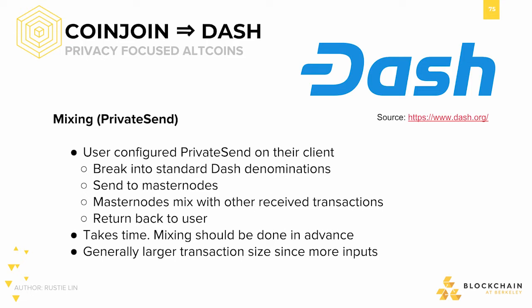When a user has private send enabled, meaning that they want to obscure the origins of their funds, their client will first prepare a transaction. The transaction inputs are broken down into standard denominations of 0.01, 0.1, 1, and 10. Then, a request is made to the masternode network, indicating that you're trying to obscure the origin of your funds.